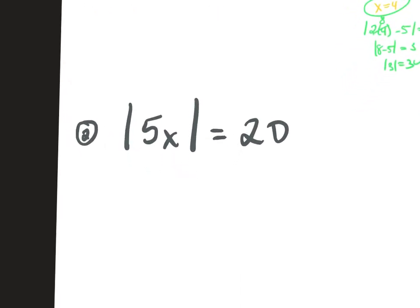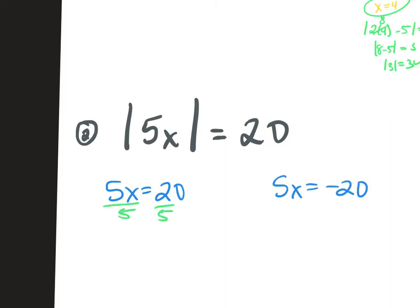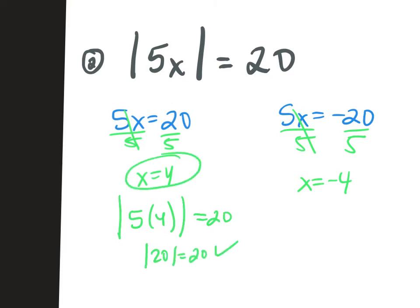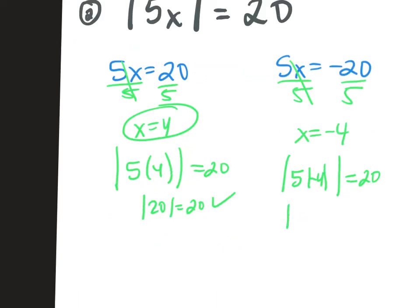This is super simple. If the absolute value is already by itself, I'm going to say 5x equals 20 and 5x equals negative 20. Divide both sides by 5: x equals 4. Divide both sides by 5: x equals negative 4. Go back to the original — absolute value of 5 times 4: is the absolute value of 20 equal to 20? Yes. Absolute value of 5 times negative 4: is the absolute value of negative 20 equal to 20? Yes.